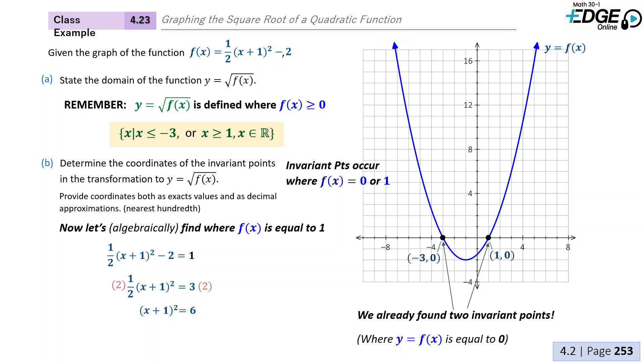Remember when you take the square root that you get a positive and negative version of that square root. That's where our two separate solutions are going to come from. So next, we're going to subtract one from both sides. So here's our solutions for x. And this would be the exact value. As exact values, we're going to keep the square roots.